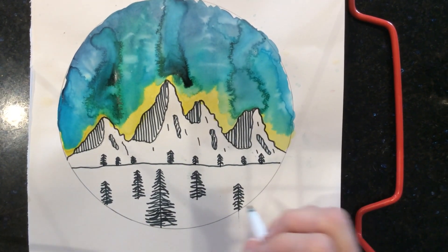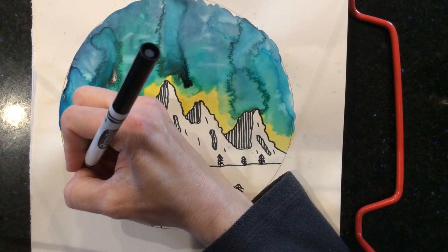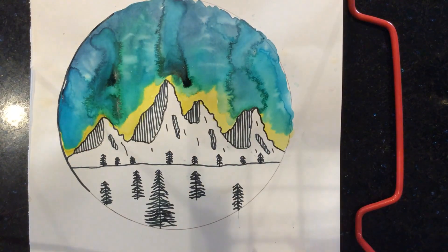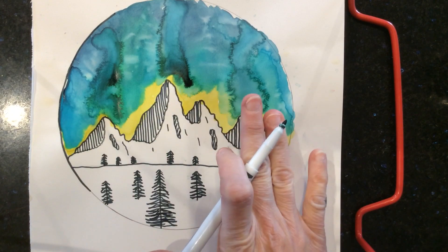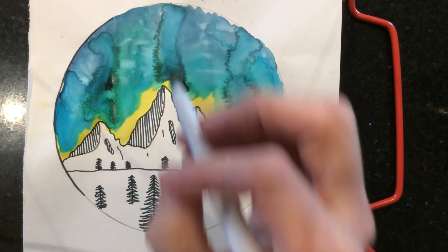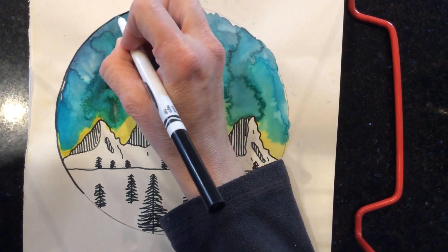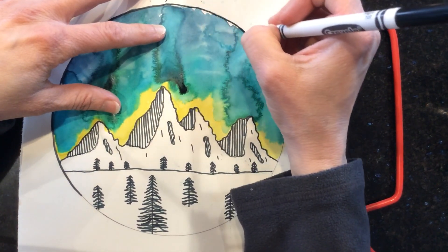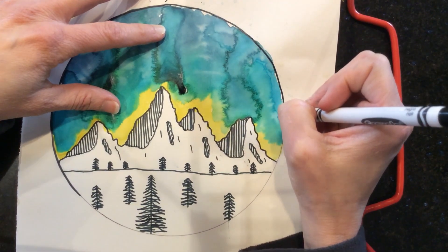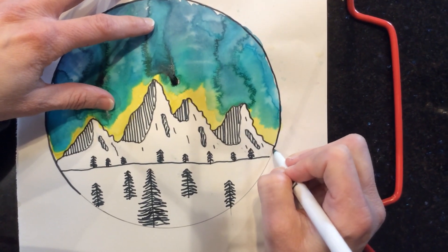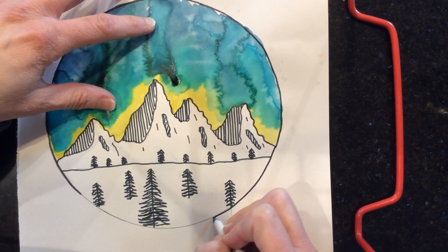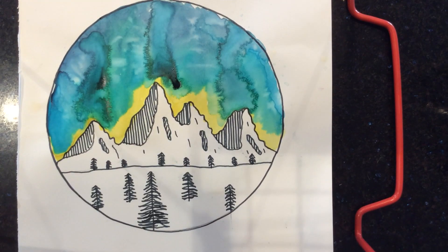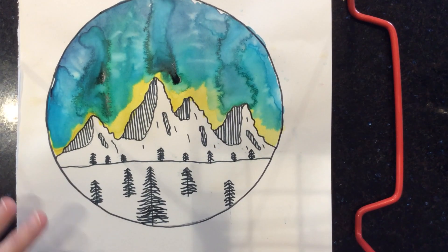You can finish this off by just very carefully going around the circle with your black marker. One thing to watch out. You may want to let this all be sure it's dry before you go do this. Because if your hand goes across, you wouldn't want to ruin your picture by smearing your black marker. Oops, I just touched the paper. So, that gives it a finished look.